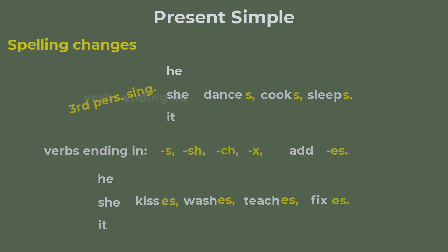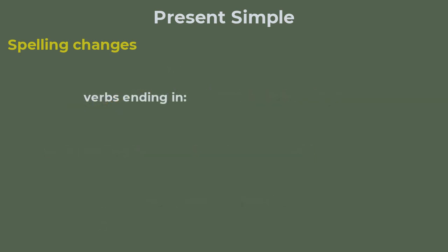For verbs ending in consonant and Y we have to drop the Y and add I-E-S. Let's take an example here. Study ends with Y but before the Y we have a D that's why the he, she, it will be studies with I-E-S and for try we will have he, she, it tries.